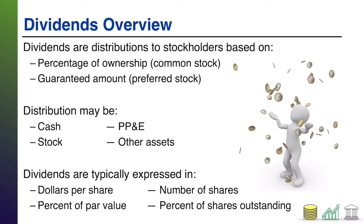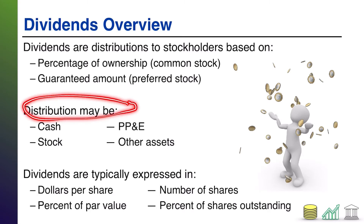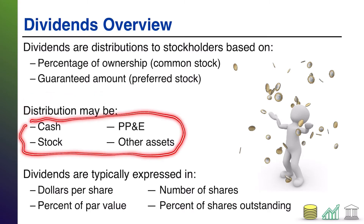When you have preferred stock, it's usually some sort of guaranteed amount. Your preferred stock might specify one percent, half a percent, or a quarter of a percent — whatever it is. That's your dividend. It's not a share of ownership; you get a return per share of stock based on a predetermined amount.